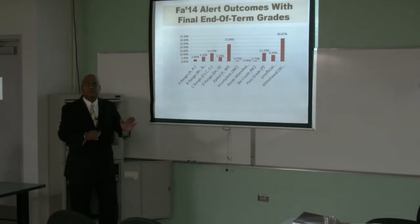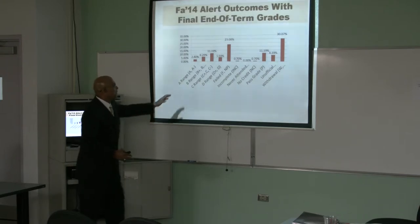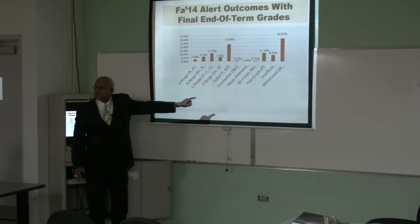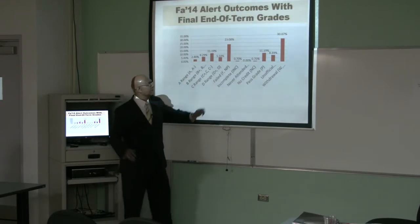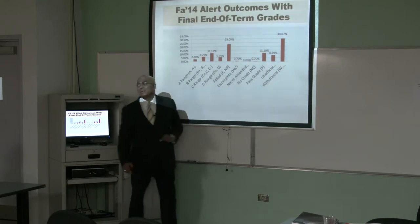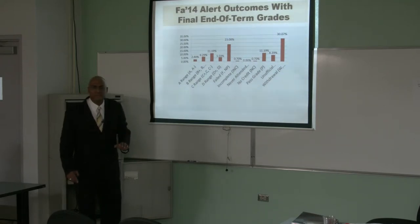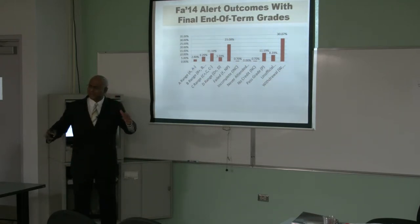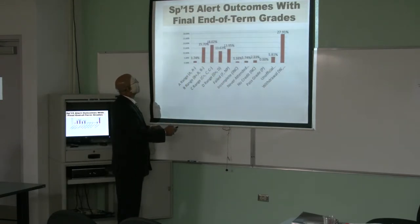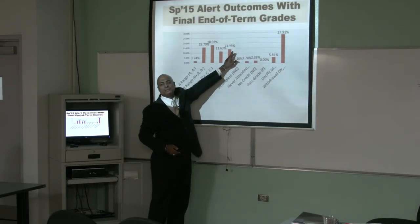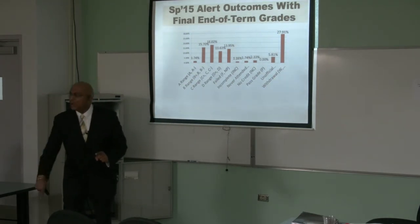We looked at the faculty training these alerts — how do you measure what you did? Look at the grades. In the fall, remember, this was the initial rollout — 23% failed after the first semester. Let's look at what happened in the spring: 13%. That was a 10% differential on the downward side. Clearly, this system is working.